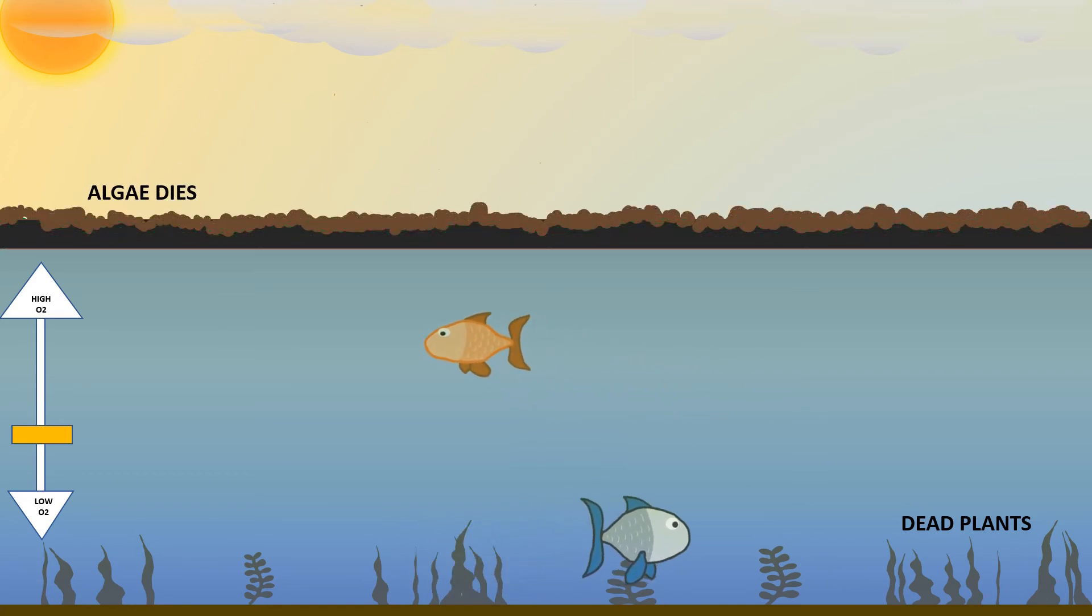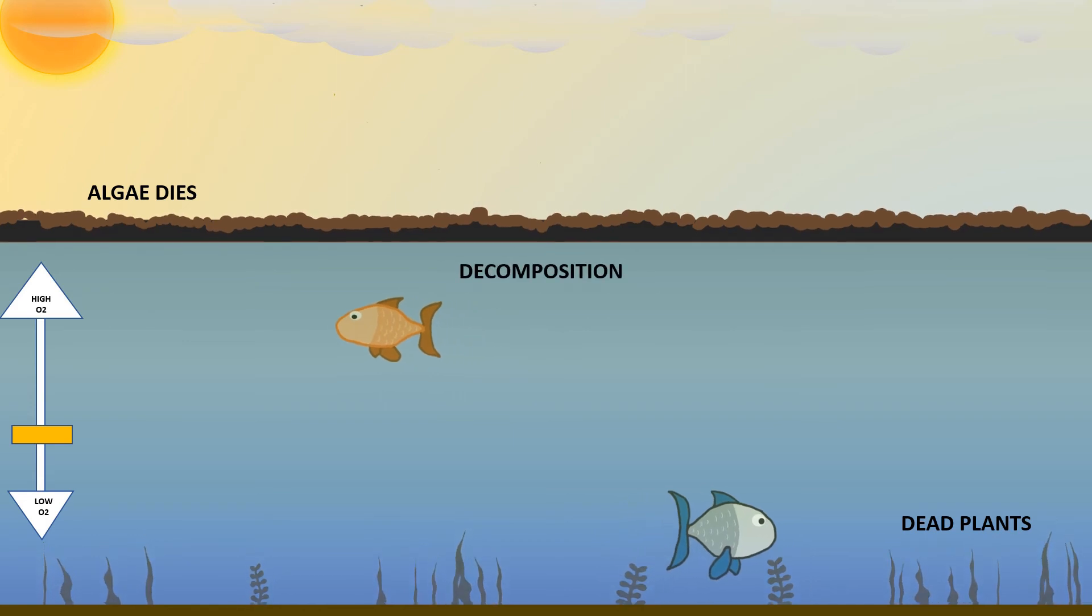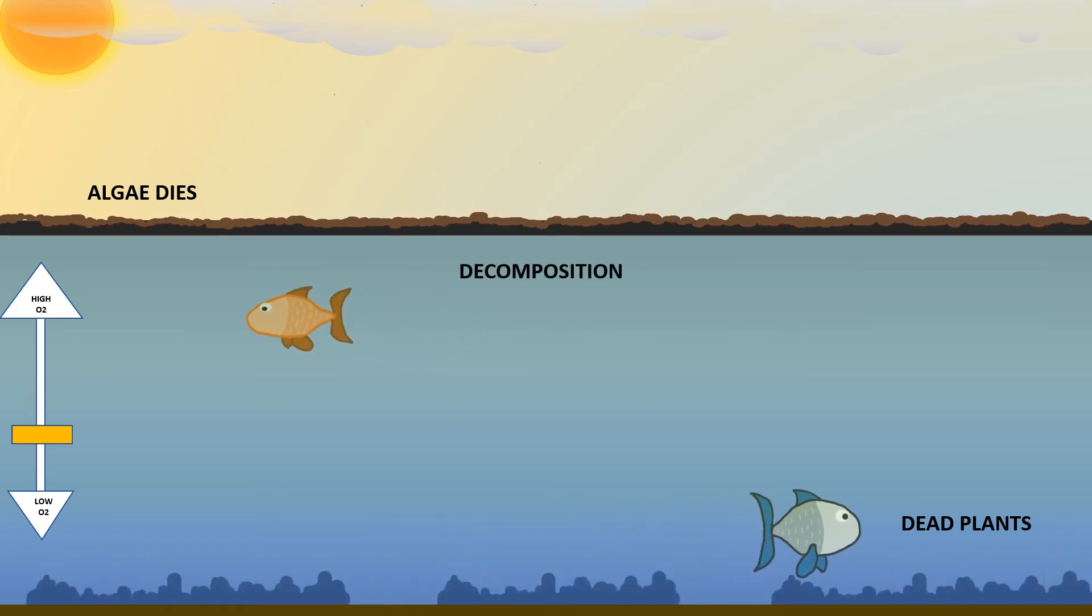Dead plants and dead algae will undergo decomposition. In this process, oxygen is required for the microbes to be able to decompose organic matter efficiently. Hence, this will further reduce the concentration of dissolved oxygen in the water.